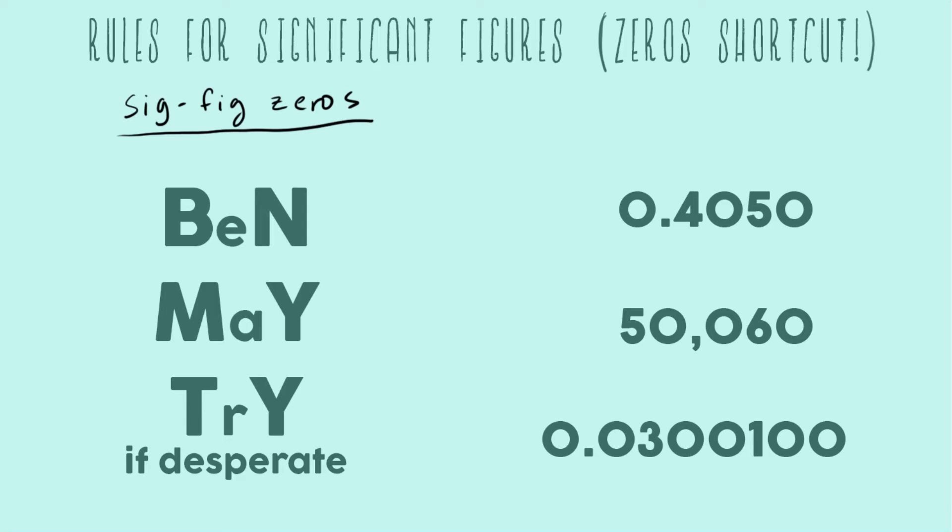Now on the left hand side that's talking about what type of zero you have. And on the right hand side that's talking about whether or not that type of zero is a sig fig. So let's go through and check off whether or not certain types of zeros count as sig figs.